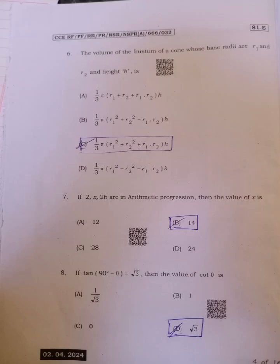Sixth, the volume of frustum of a cone whose base radii are R1 and R2 and height H is option C, 1 by 3 pi into R1 square plus R2 square plus R1 into R2 into H.